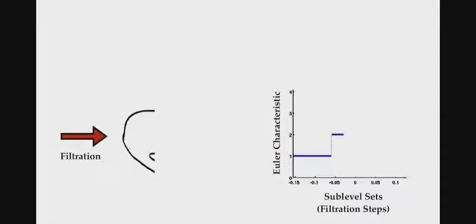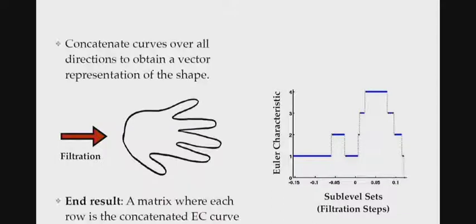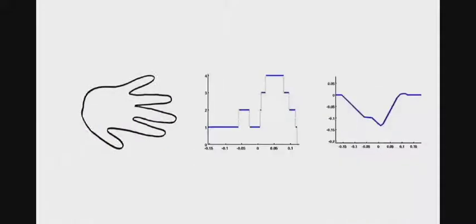This is a hand. As we move through, this is how the Euler characteristic, which for 2D is vertices minus edges, changes. This is what you get. This was the hand, this was the Euler characteristic curve, and that's a smooth version.